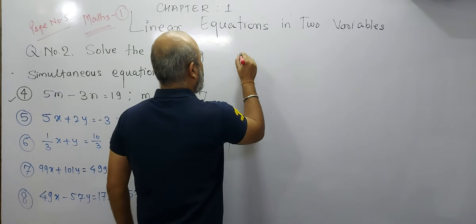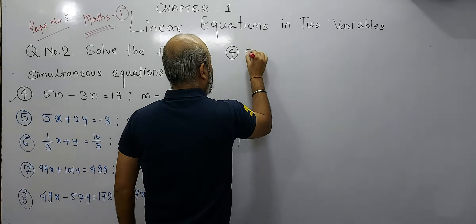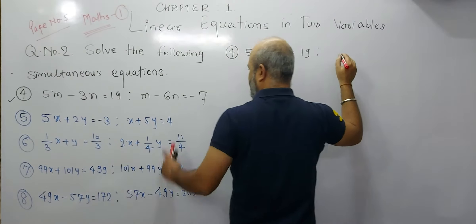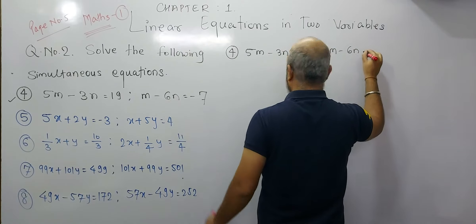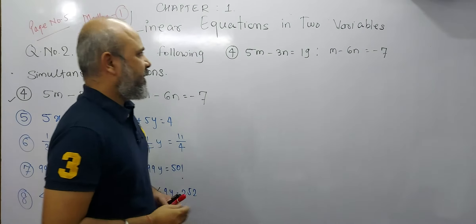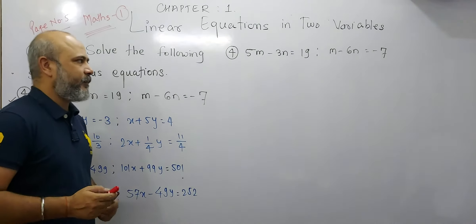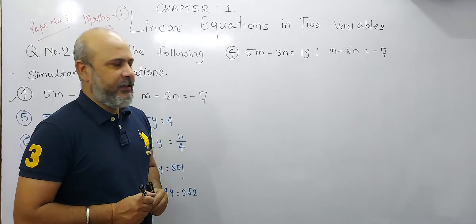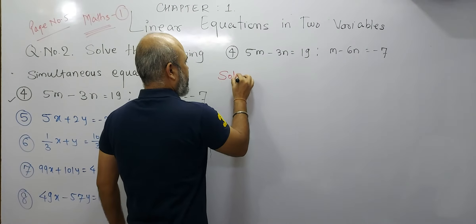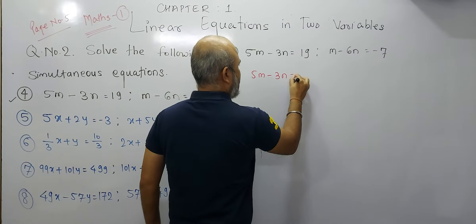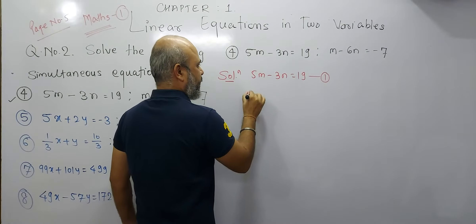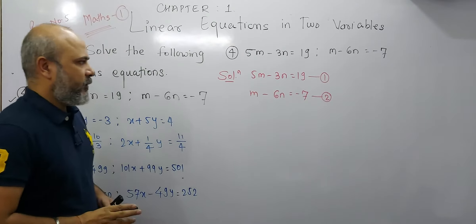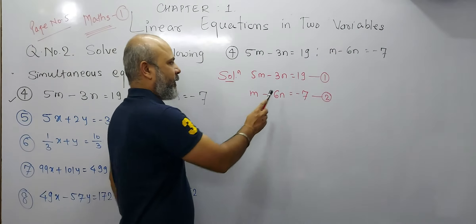Question number 4 is: 5m minus 3n and this is equal to 19. The second equation is m minus 6n and this is equal to minus 7. So question number 4 has two equations: 5m minus 3n equals 19, and m minus 6n equals minus 7. We know how to solve this simultaneous equation. We take equation 1 as 5m minus 3n equals 19, and equation 2 as m minus 6n equals minus 7. Now we will make the coefficient of variable n the same.